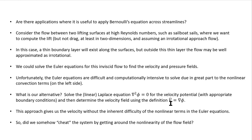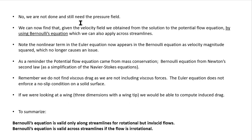Solving a linear equation for phi and obtaining velocity as its gradient avoids the inherent difficulty of the nonlinear terms in the Euler equations — that's a significant advantage. We then find the pressure field using Bernoulli's equation, applicable across streamlines under the irrotational assumption. The nonlinear term from the Euler equation now appears in Bernoulli as a function of velocity magnitude squared, which poses no difficulty since velocity was already obtained from the potential flow solution. Note: the potential flow equation came from mass conservation; Bernoulli came from Newton's second law as a simplification of Navier-Stokes. Viscous drag will not be found in a 2D problem since viscous forces are excluded and the Euler equation doesn't enforce a no-slip condition.